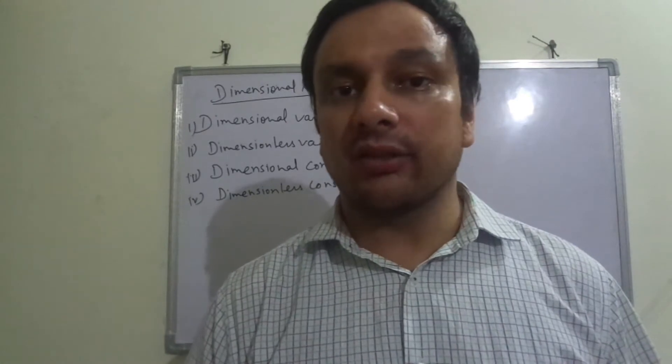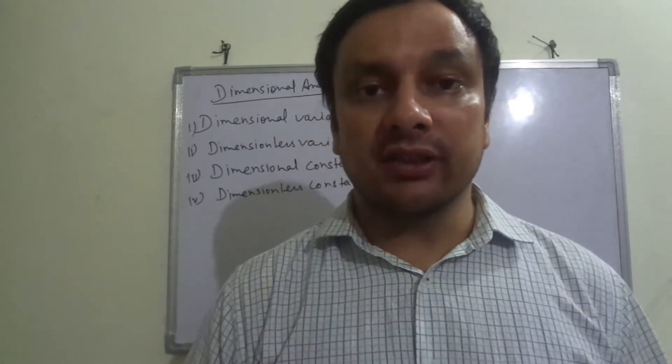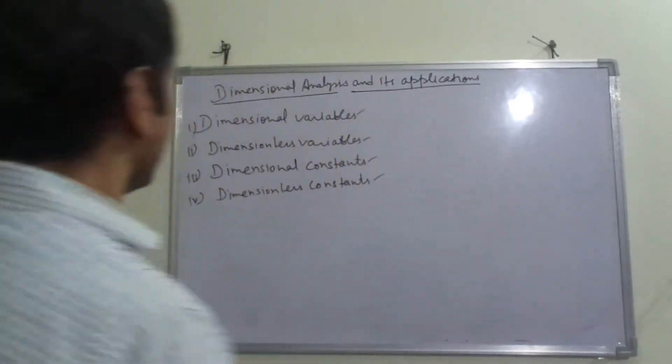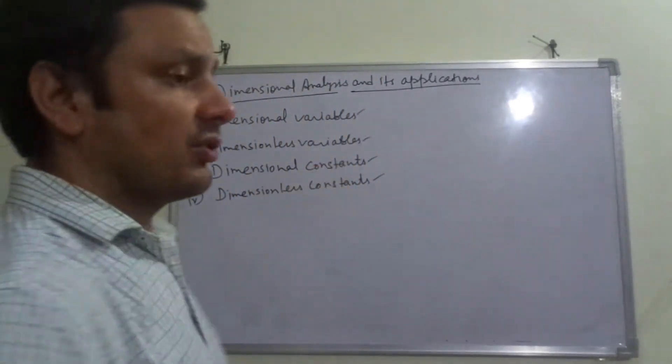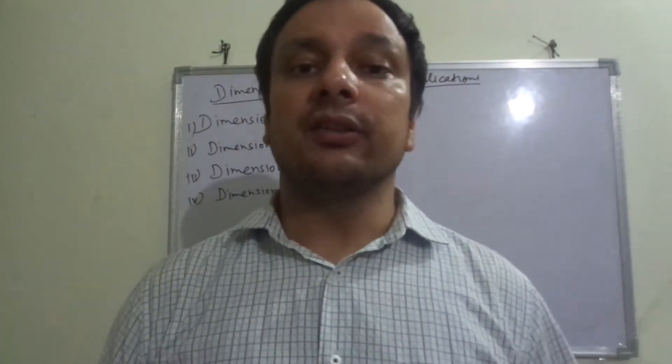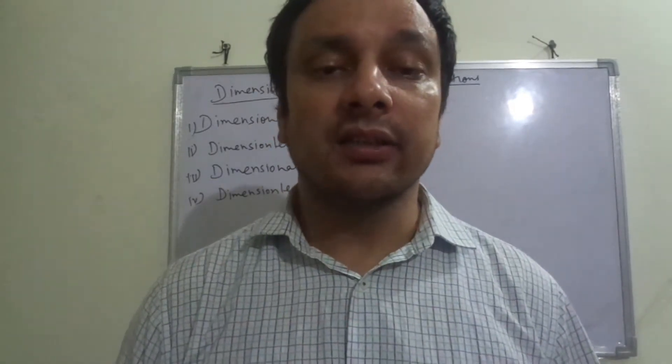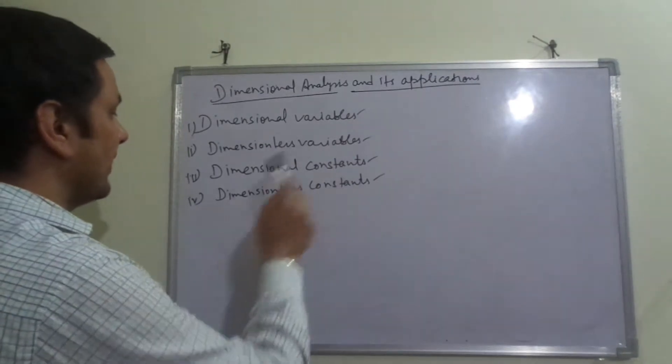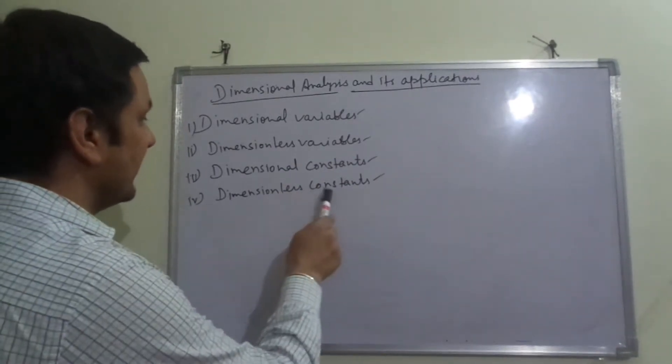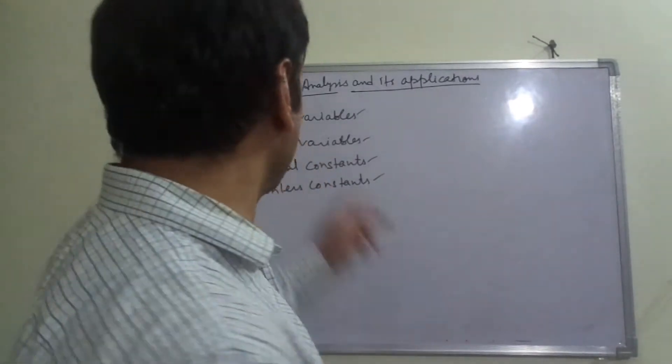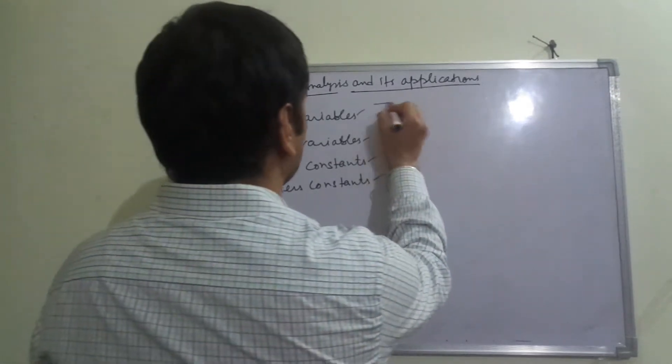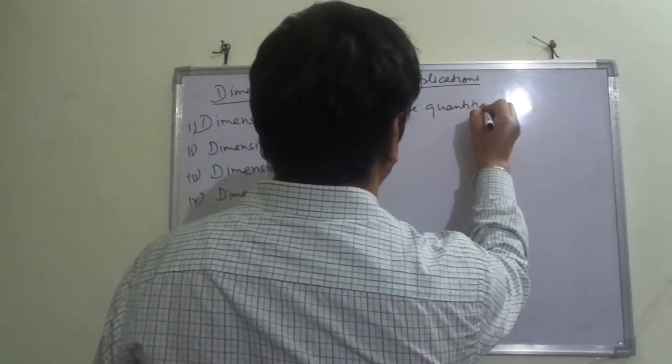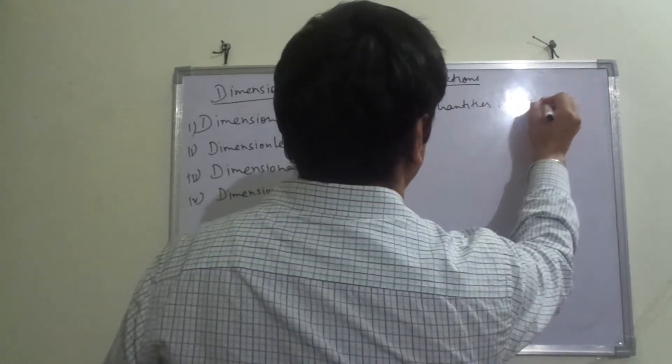Universal gravitational constant, which we write as capital G. The value is constant. Dimensionless constants are also with us. Now dimension variables, what are those quantities? Simple, you can remember that whose dimensions vary.